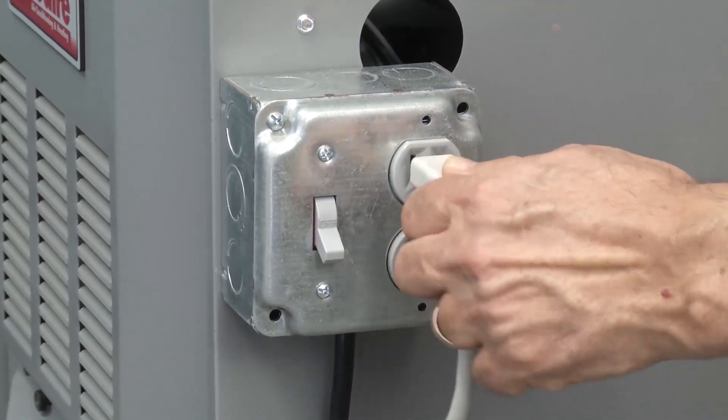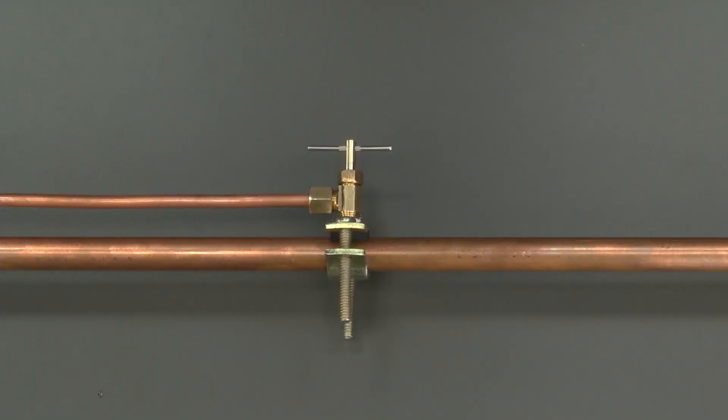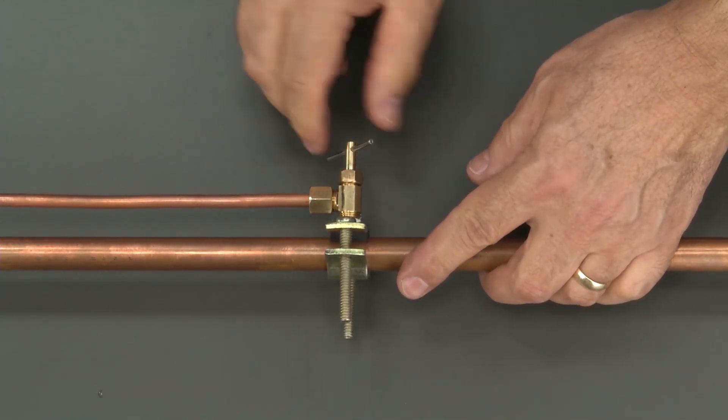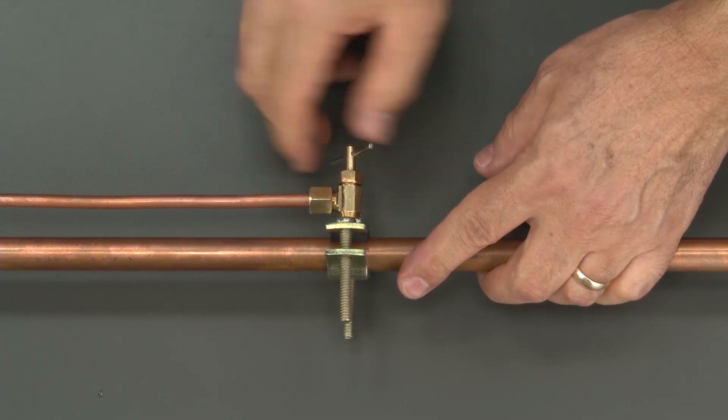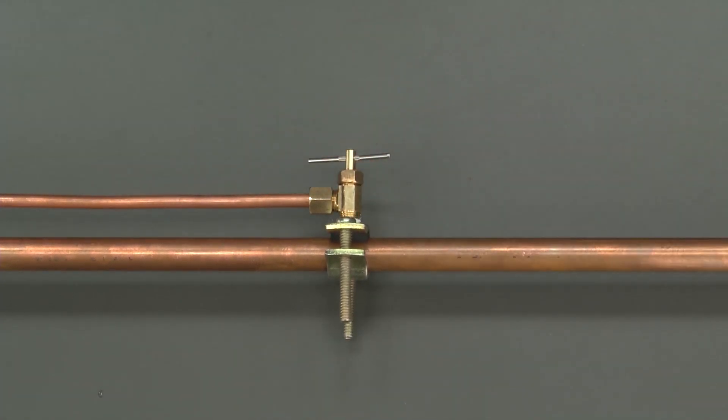Be sure to turn the power off before performing any maintenance. Before performing this service, it is necessary to shut off the water. Find the saddle valve and turn it clockwise until it stops.